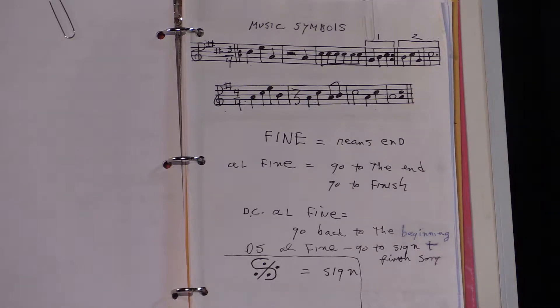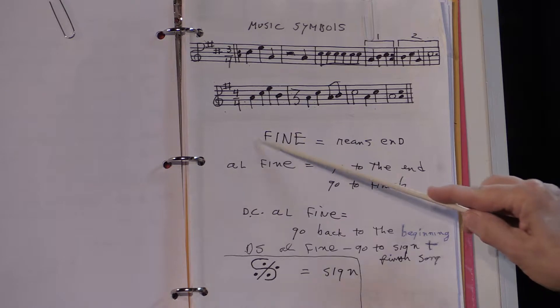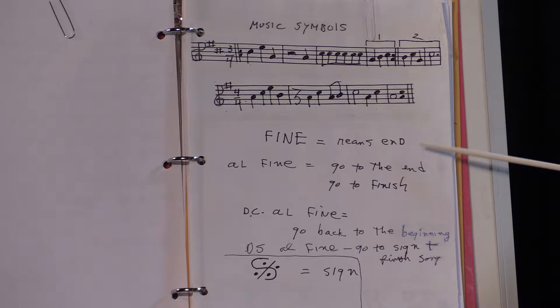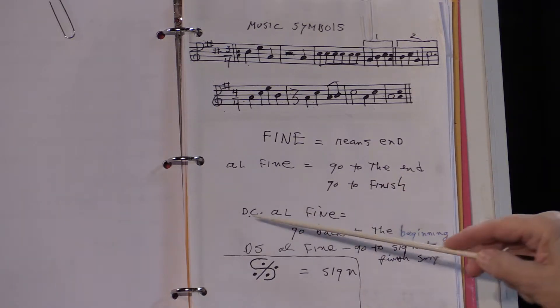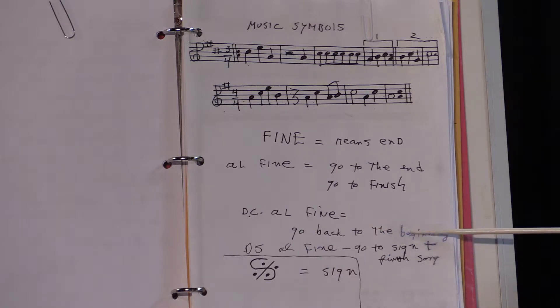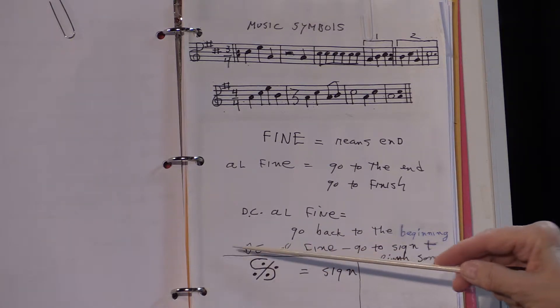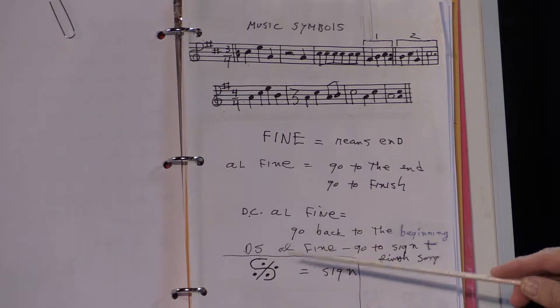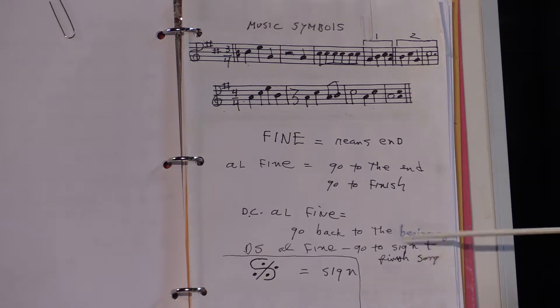So Fine means end; Al Fine means go to the end or finish. DC al Fine means go back to the beginning and play to the end. DS al Fine means go back to the sign, wherever it is, and then finish the song. And here again is the sign — when I write music I tend to simplify it, just writing a little S with a couple of dots, but that's what the sign actually looks like.